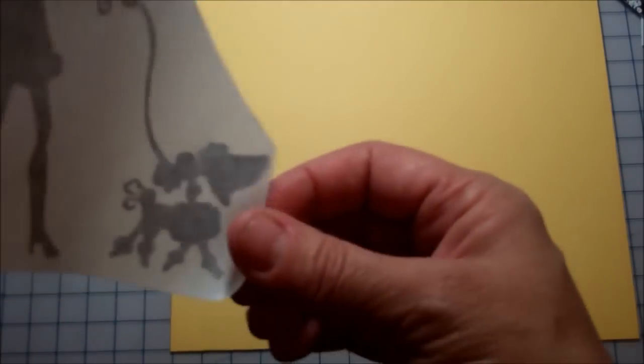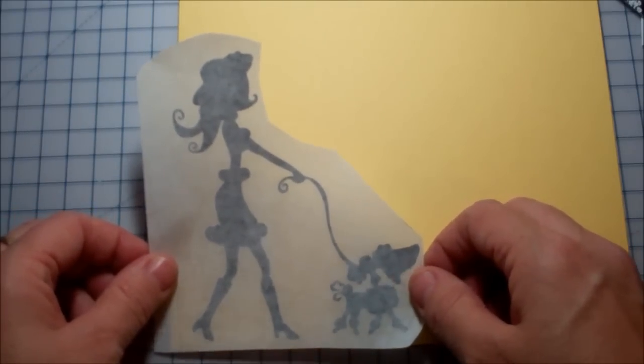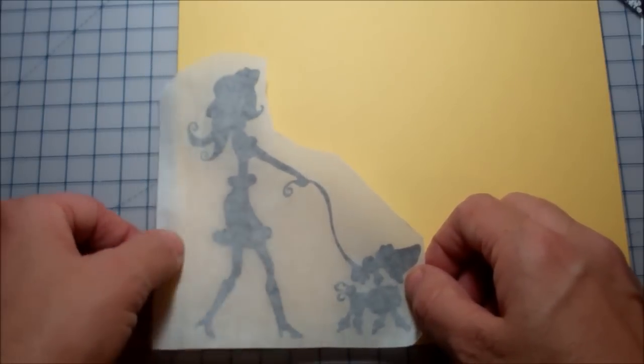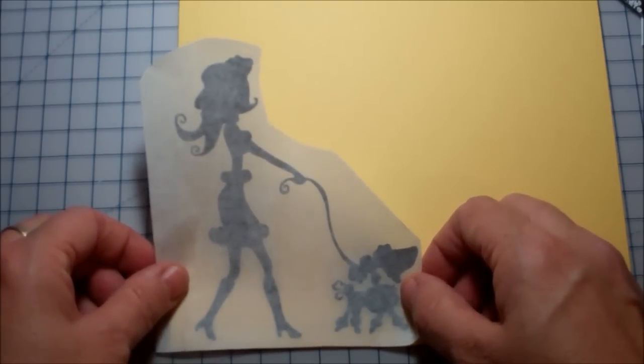Now I'm going to go ahead and put her on here. I'm going to leave a little space at the bottom because I think I'm going to add a little stitching. So I don't want her right there on the edge of the paper.